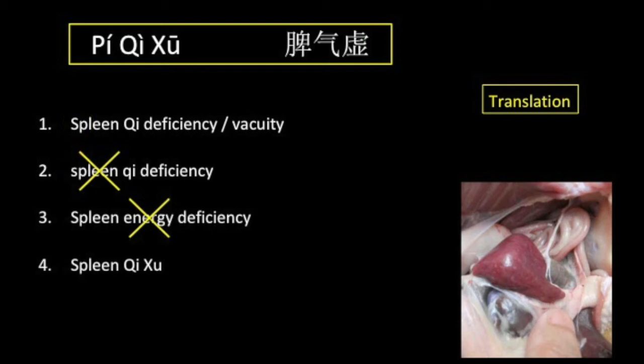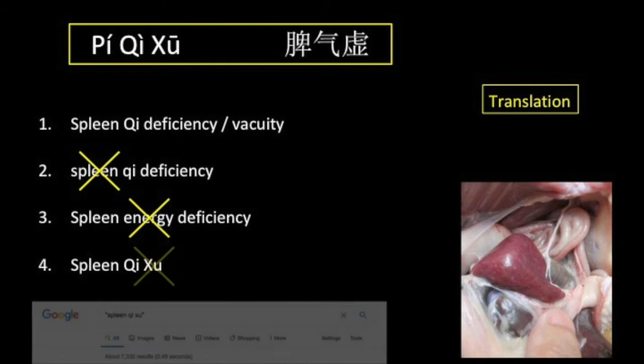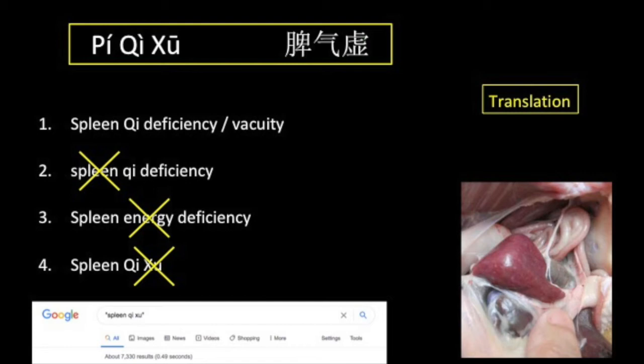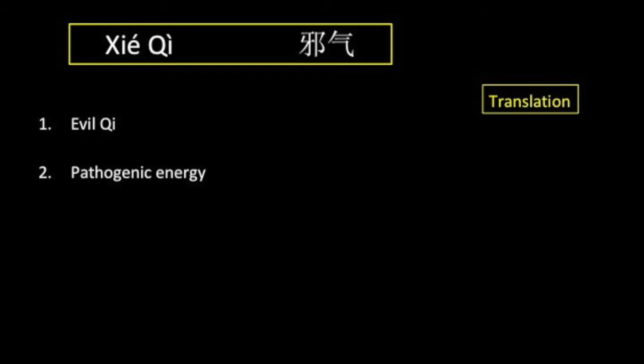As I mentioned before, qi is a common concept in TCM, and translating it as energy is inadequate. 'Spleen qi shu' is in my opinion the worst of the translation options, and it appears in over 7,000 Google searches.